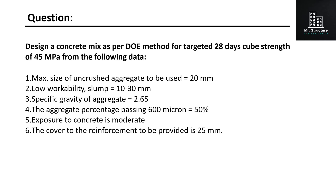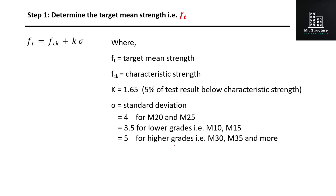Let's solve the problem step by step. The first step is to determine the target mean strength, which can be calculated using the formula FT equals FCK plus K times sigma, where K equals 1.65 and sigma is the standard deviation depending upon the grade of concrete. The value of sigma is equal to 4 for M20 and M25, sigma equals 3.5 for lower grades than M20, and sigma equals 5 for higher grades than M25. However, in our case, we are directly given the value of target strength. Hence, FT equals 45 MPa.